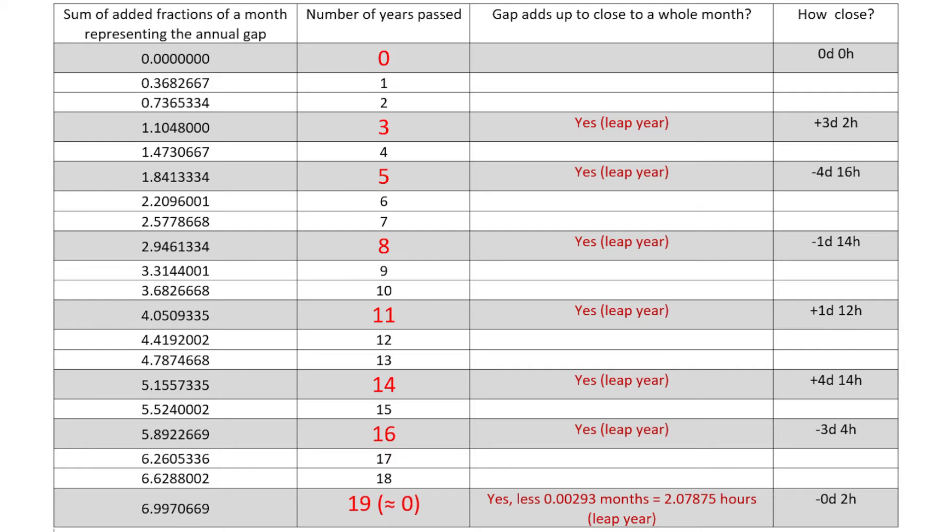If we had continued on calculating, we would have seen that again the leap months would have come in the 3rd, the 5th, the 8th, the 11th, the 14th, the 16th, and the 19th, and so on, over and over for hundreds of years.